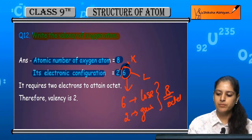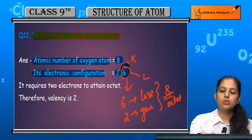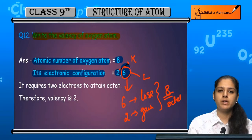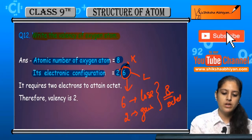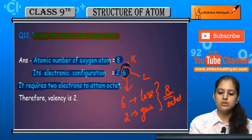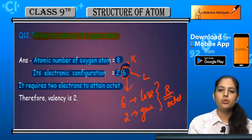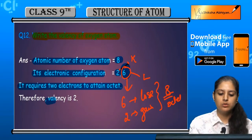Losing 6 is more difficult compared to gaining 2. So it requires 2 electrons to attain octet. Since it takes 2 electrons, its valency is 2.